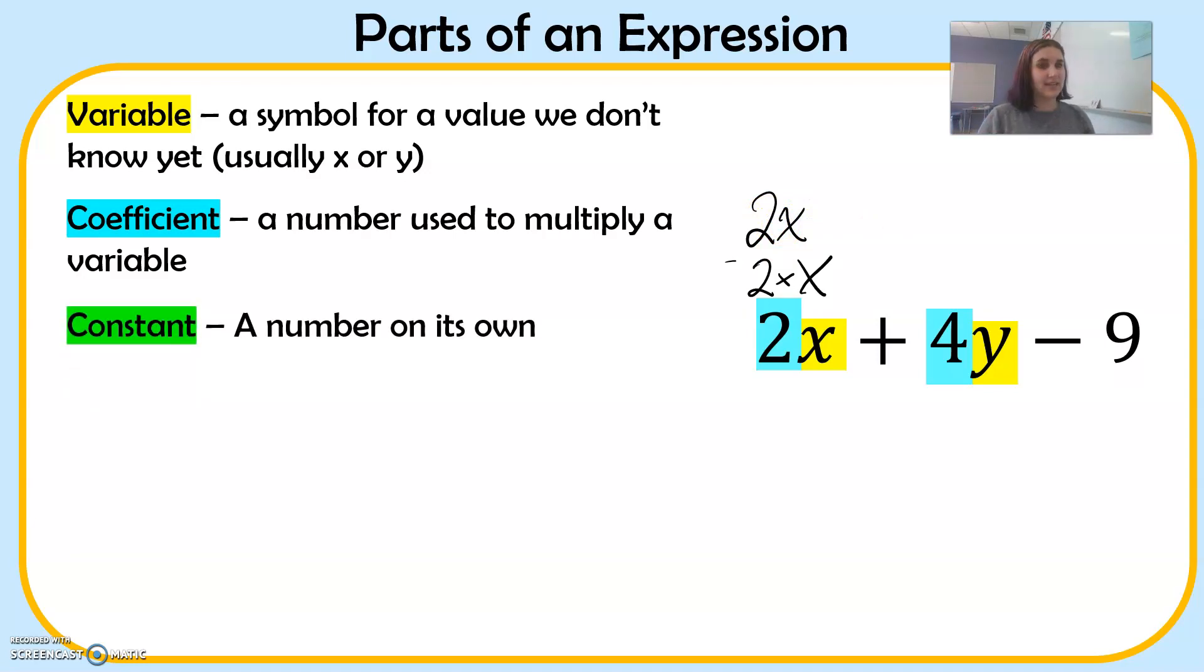Next is a constant. A constant is a number on its own. It doesn't have a variable attached to it. It's just on its own. It's a plain old number. So in this example, 9 is the constant. It's got no variable.